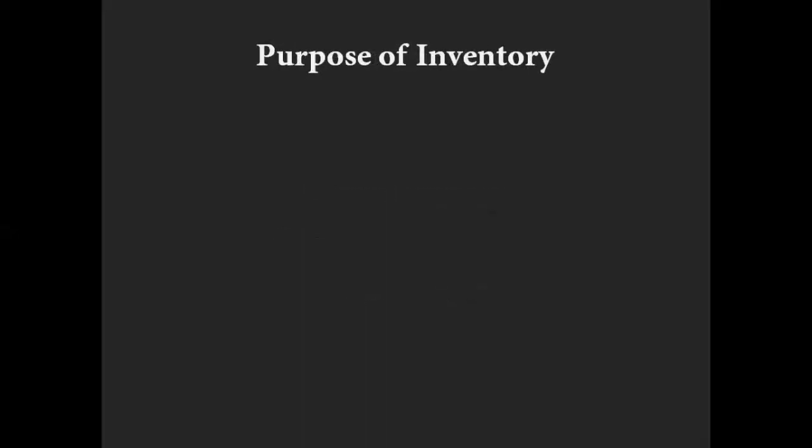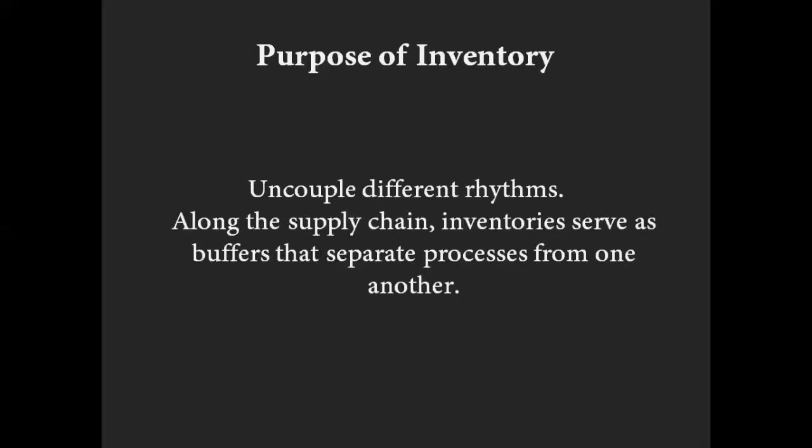We know from our previous video that the purpose of inventory is to uncouple different rhythms, and that's the main role of inventory. As processes have different fluctuations, by having buffers it allows processes to be slightly separated from one another. Depending on the regularity and the flows along the supply chain, we are either going to allow inventories to build up if the process is running slow, or if it is running fast, the amount of inventory is going to be small.